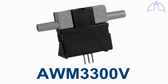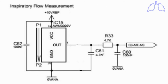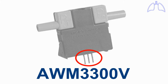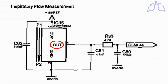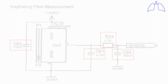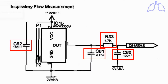In the Medtronic PB560, we use the AWM3300V as a flow sensor. You can download its datasheet from the description of this video. The circuit of the flow sensing is very simple. The flow sensor has three terminals: two of them are connected to the power supply, and the third terminal is the sensor output. The other components of the circuit are simple passive components.